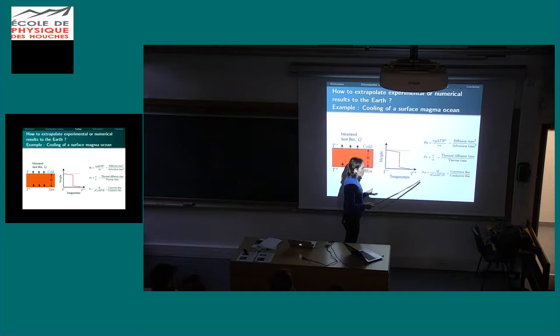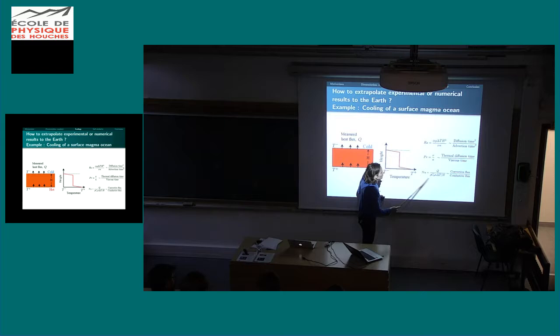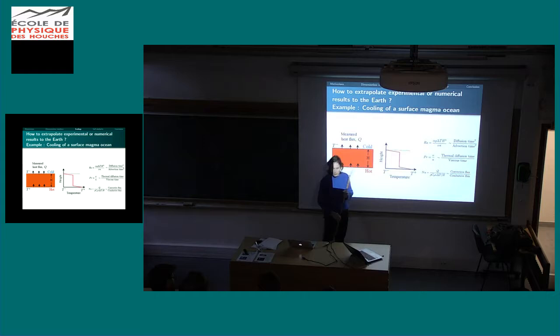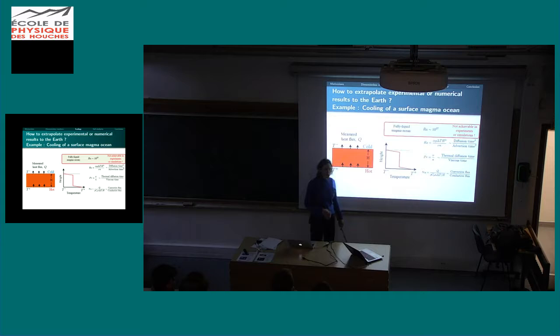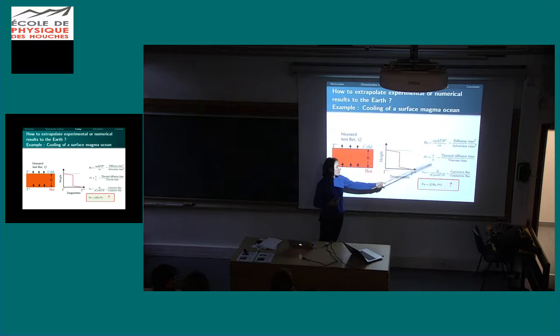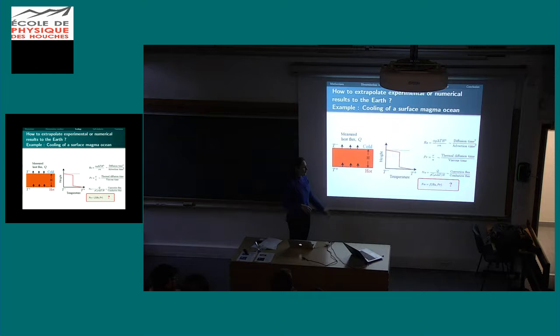What we are looking for is what we call the Nusselt number, which is just your heat flux Q divided by the heat flux if you had only thermal conduction through the layer. It's just a way to normalize the heat flux that you can measure in your experiments. The Rayleigh number for a fully liquid magma ocean is really high — 10 to the power of 27 — so extremely high. There is no way you can reach that in experiments or simulations nowadays. That's why you need scaling laws to know what your heat flux will be. The game is to find a scaling law for the Nusselt number as a function of the Rayleigh number and the Prandtl number, to know the Nusselt number at the value of the Rayleigh number in the magma ocean.